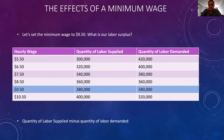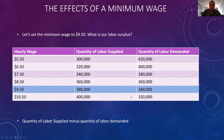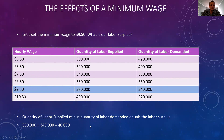Let's see what happens if we set a minimum wage. For this exercise, we are setting the minimum wage to be $9.50. And so at $9.50 an hour, we have a quantity of labor supplied at 380,000 and a quantity of labor demanded at 340,000. So in order to find our labor surplus, we take quantity of labor supplied minus quantity of labor demanded, which is 380,000 minus 340,000, giving us a surplus of 40,000.